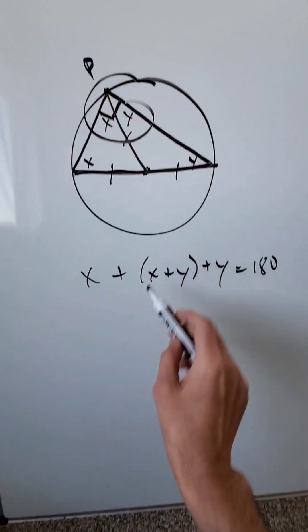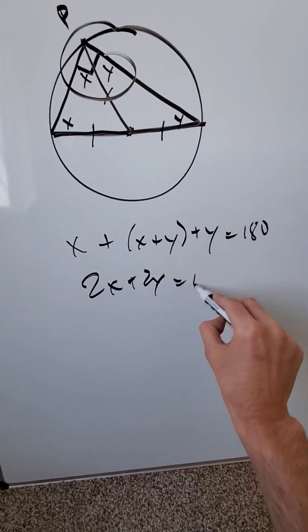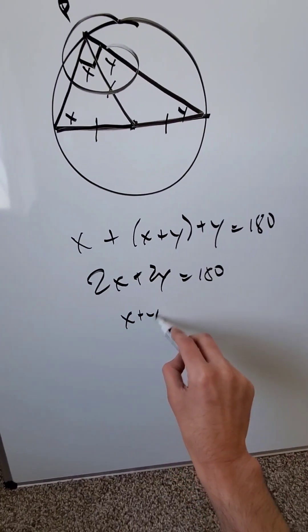This X plus Y relates to this over here. Add these up. 2X plus 2Y equals 180. X plus Y equals 90.